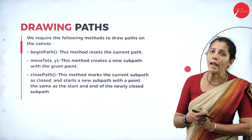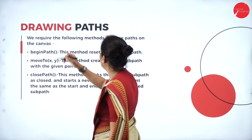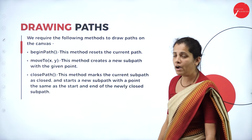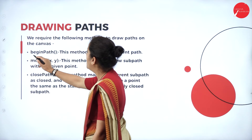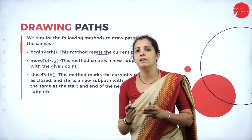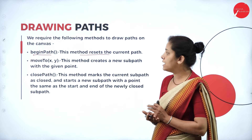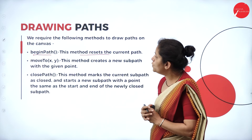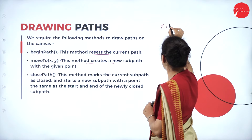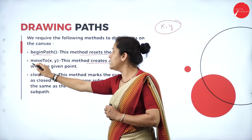Now, suppose if I want to draw any path in my canvas — I can draw a path. To draw a path in HTML5 using canvas, there are certain methods. First, beginPath — this method resets the current path. Second, moveTo — this method creates a new sub-path given x and y coordinates. If I want to reset an existing path, I'll use beginPath, and to move to a new position, I'll use moveTo.